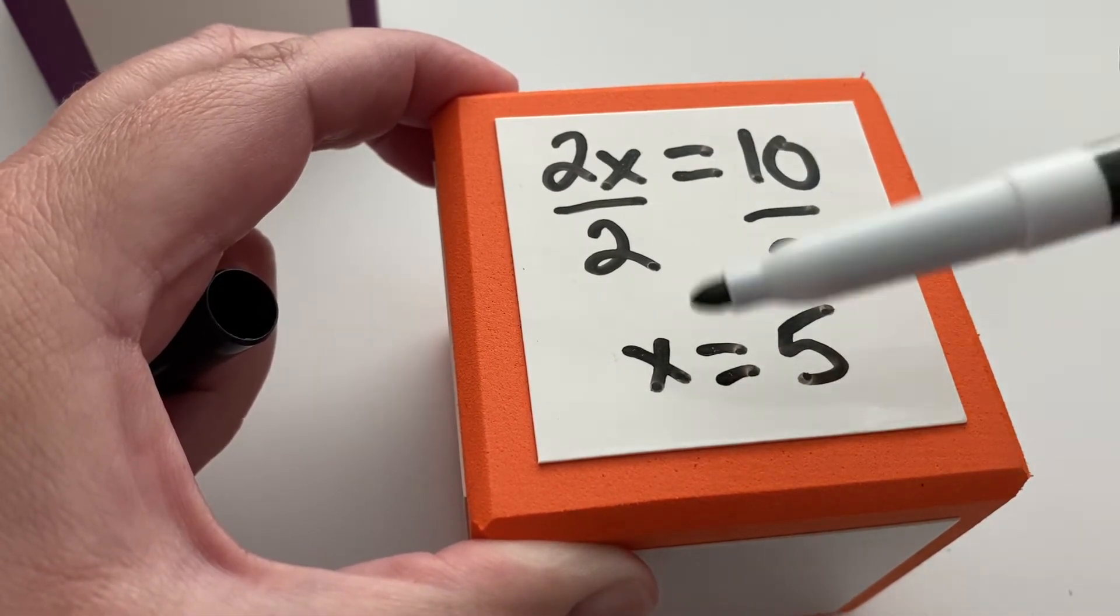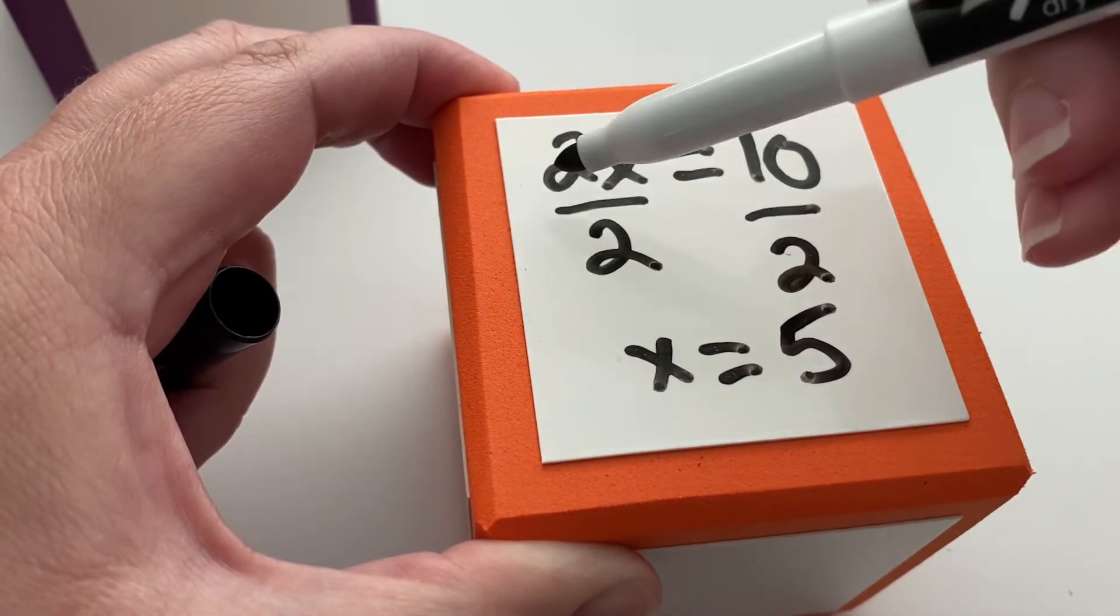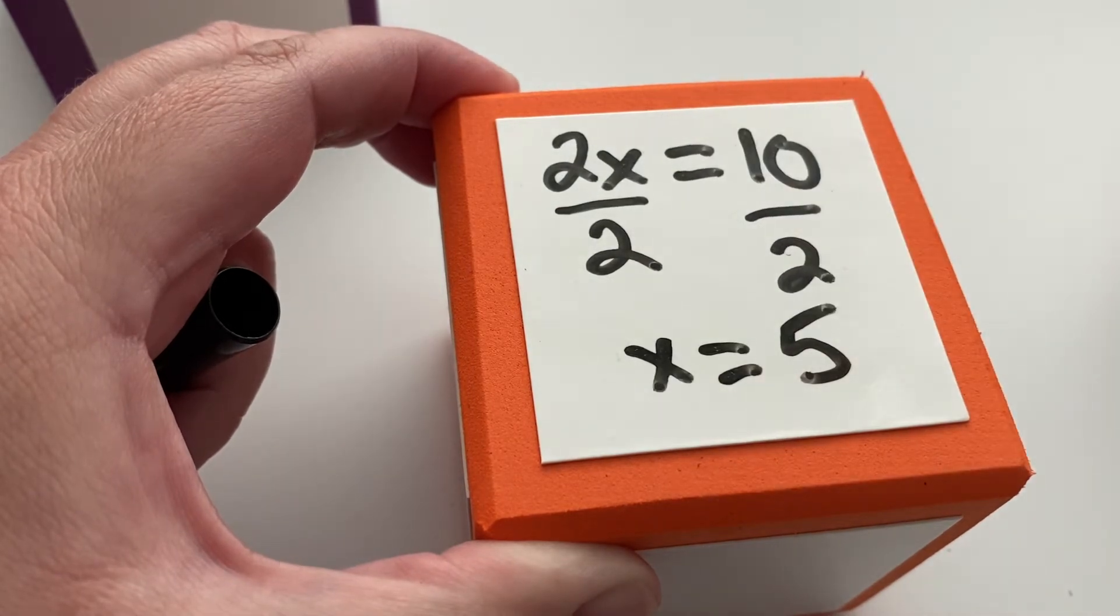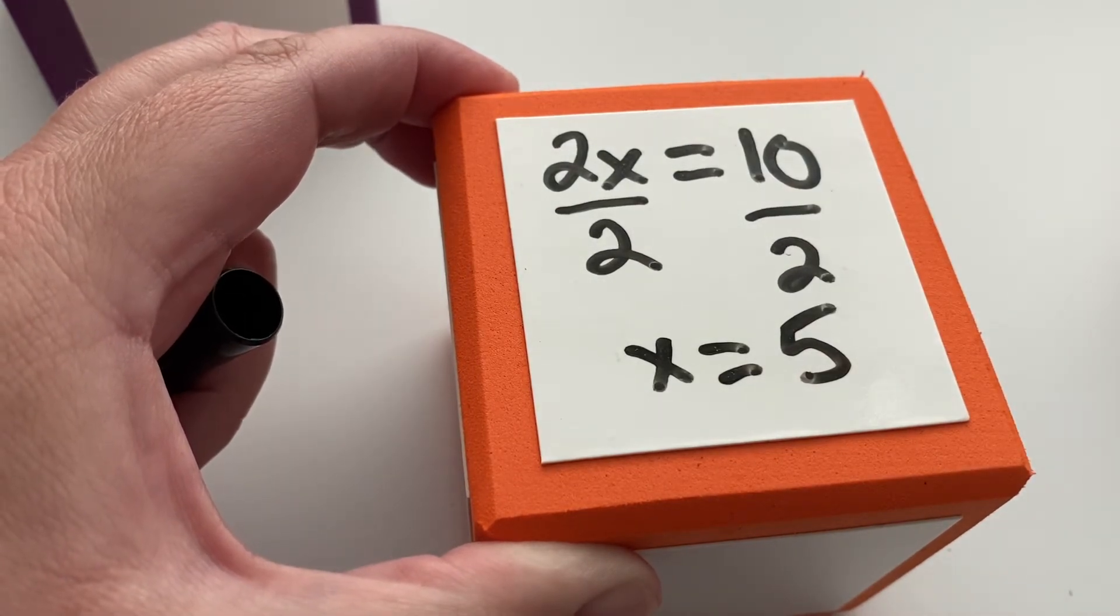And 2x divided by 2—these make 1. 2 divided by 2 is 1, so you're left with 1x. And there you have it. Let's look at another one.